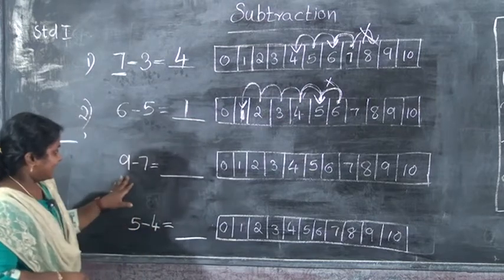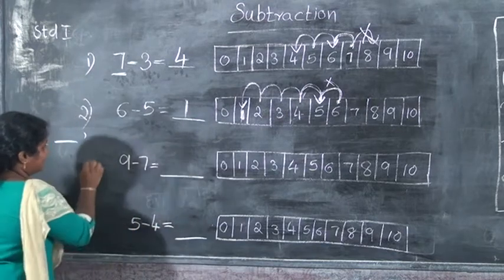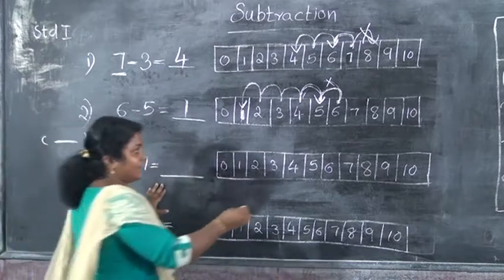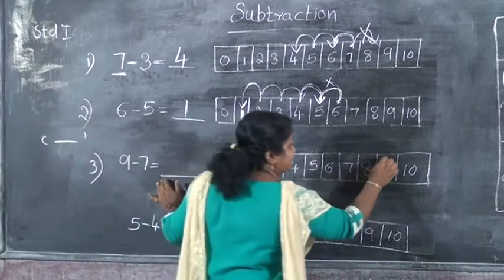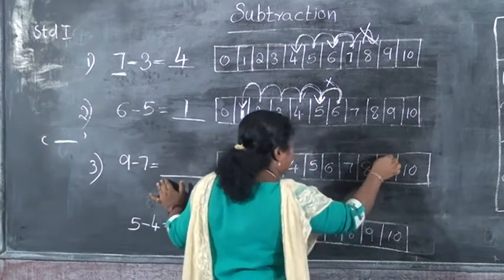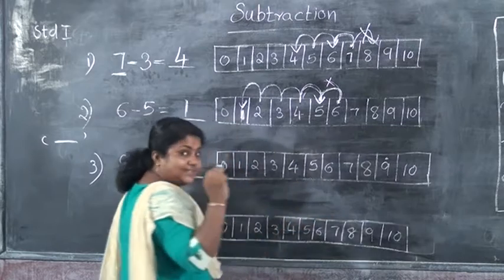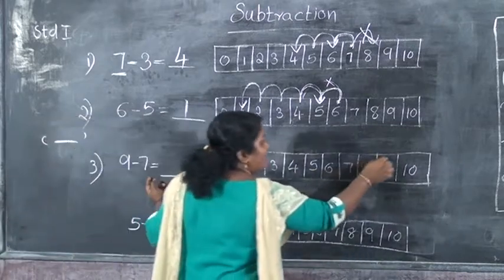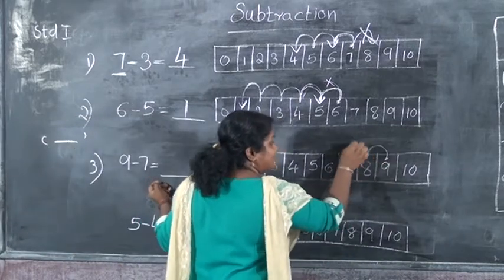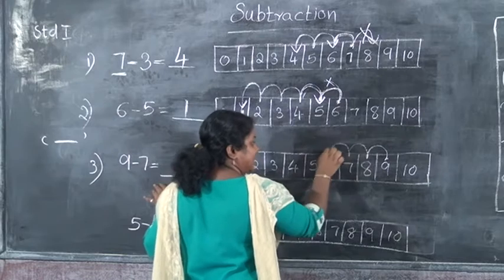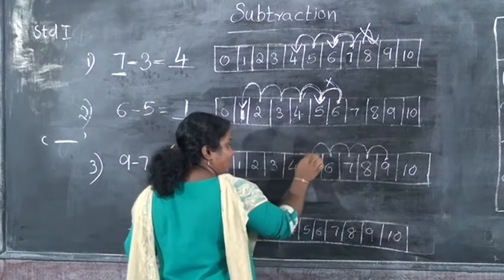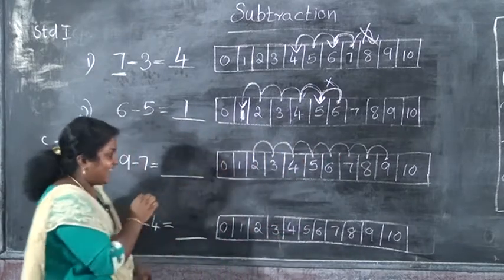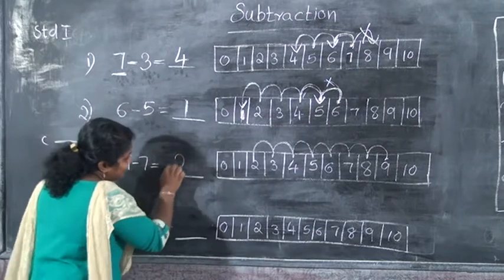Understood? The third question: 9 minus 7. 9 is the biggest number, so put a dot on 9. And we have to take 7 backward jumps: 1, 2, 3, 4, 5, 6, 7. The answer is 2.